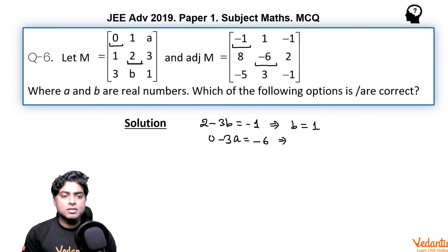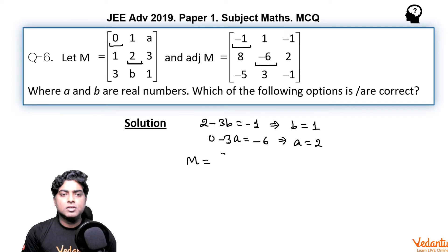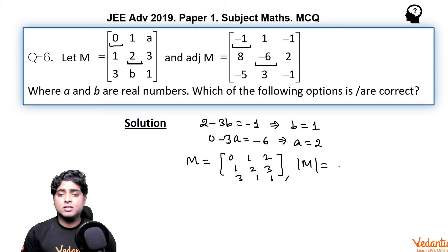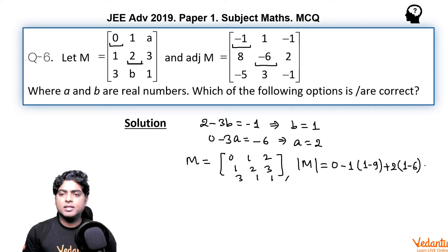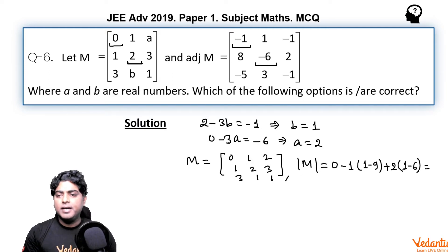So from here we can write M as the matrix with rows [0, 1, 2], [1, 2, 1], [2, 3, 1]. The determinant of M, opening with the first row, is 0 − 1×(1 − 9) + 2×(1 − 6), which comes out to be 8 − 10 = −2. So the determinant of M is −2.